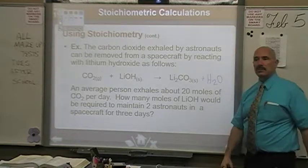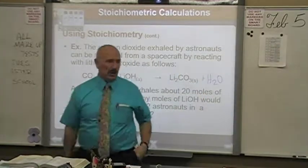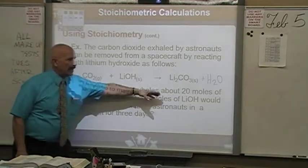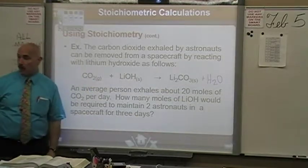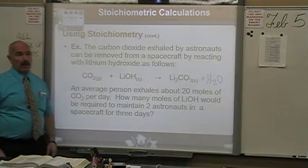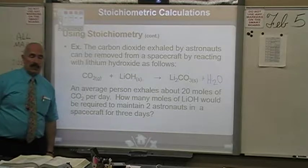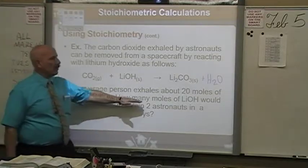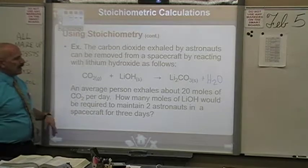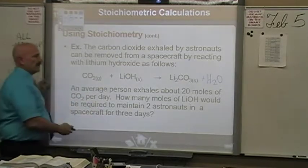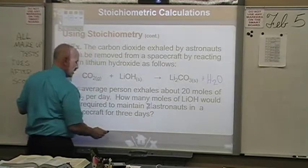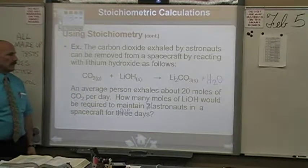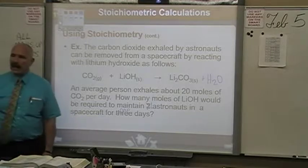How many moles of lithium hydroxide would be required to maintain one astronaut for one day? First step: balance the equation — put two in front of LiOH. Now we have one carbon, two plus two oxygens, three plus one oxygens, two hydrogens, two lithiums on each side. Balanced. Now write: 20 moles of CO2 — we're starting with moles, so we go straight to the mole ratio step.